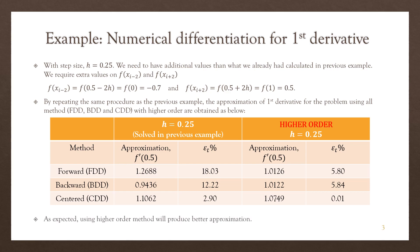So as expected, using higher order method will produce better approximation. Surely we can discuss more about the efficiency, because for higher order, you need extra points, such as x_i minus 2, x_i plus 2, the value of the function at x_i minus 2, and the value at x_i plus 2, but it can produce a very good approximation, which is close to the exact value.